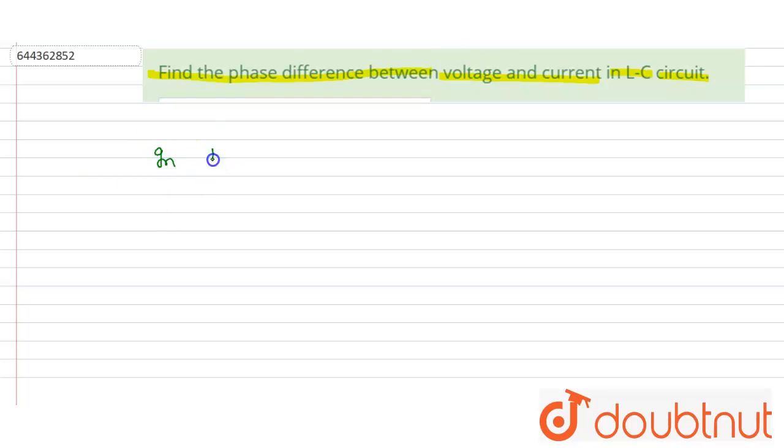LCR circuit, what is the phase difference? So the phase difference can be written as phi equal to